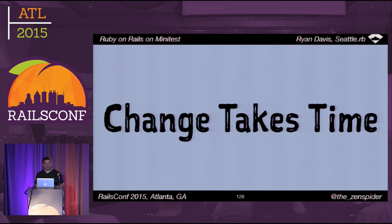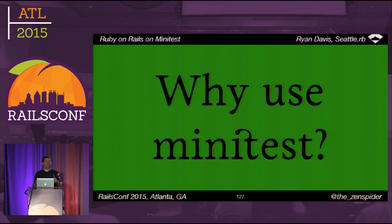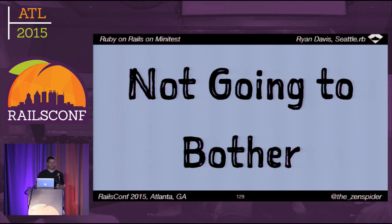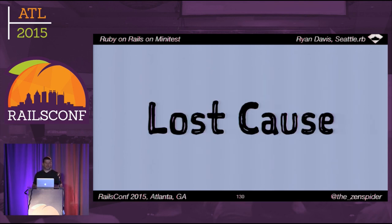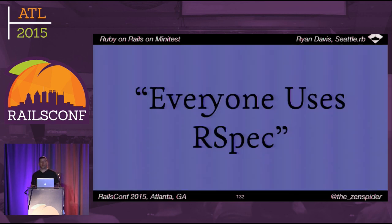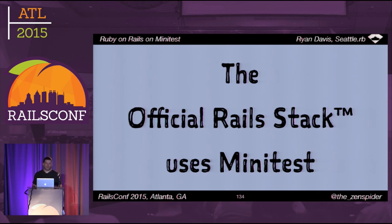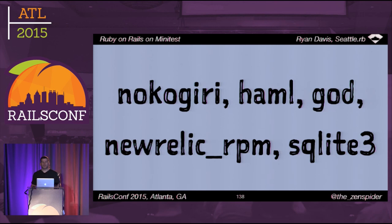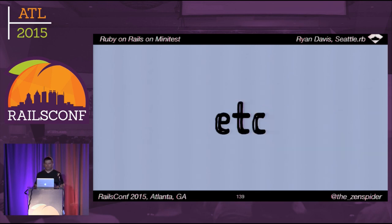So all this Minitest stuff sounds interesting, but why should you bother? The official Rails stack uses it, which means DHH uses it. Tenderlove uses it. Jeff Casimir and his cohort teach Minitest at Turing school. Nokogiri, Haml, New Relic, SQLite, and a bunch of other very popular gems use it. In fact there are more than 4,000 gems that declare dependencies on Minitest — and since Minitest ships in the standard library, plenty more gems don't even declare their dependency on it.